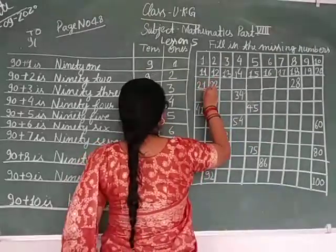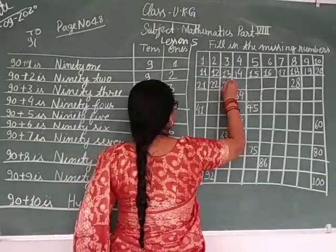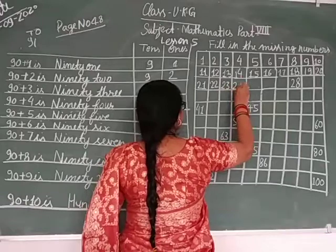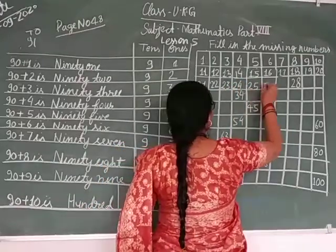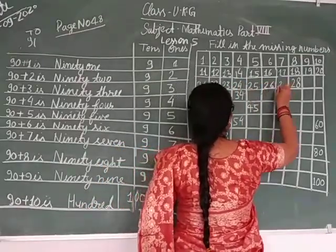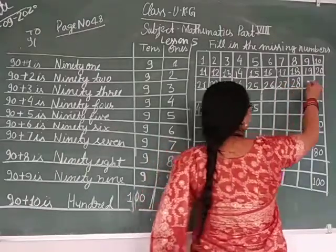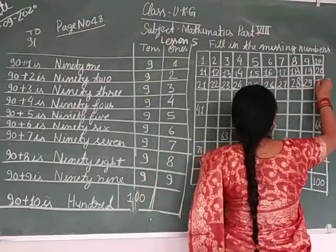Twenty-one, twenty-two, twenty-three, twenty-four, twenty-five, twenty-six, twenty-seven, twenty-eight, twenty-nine, and thirty.